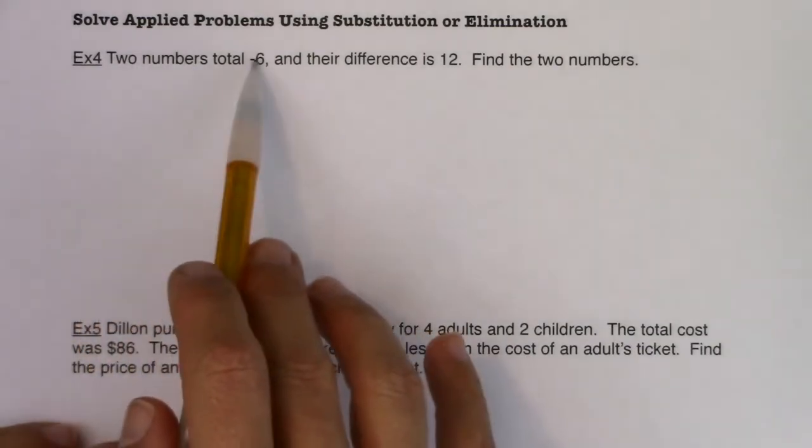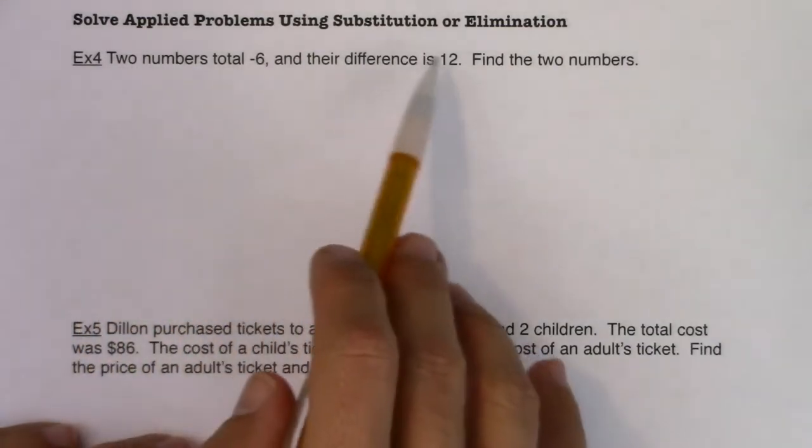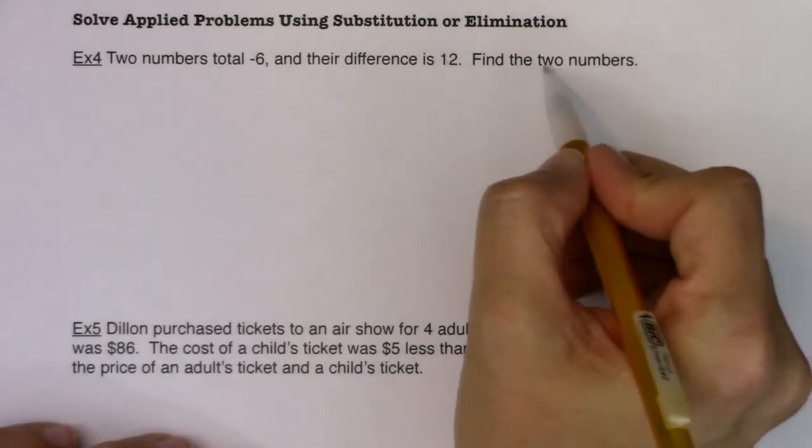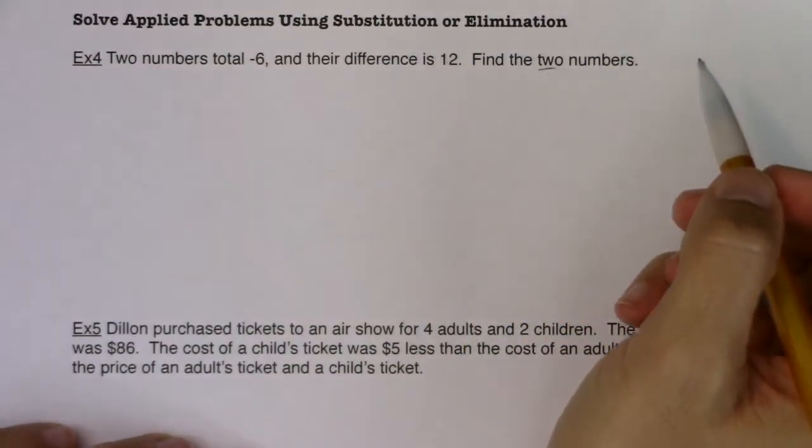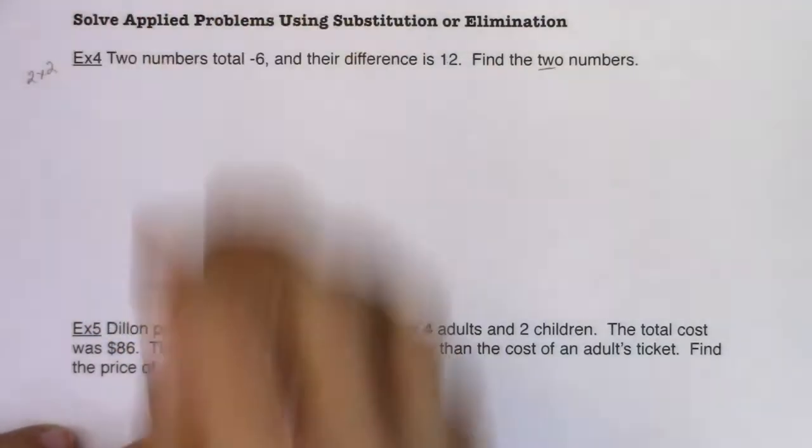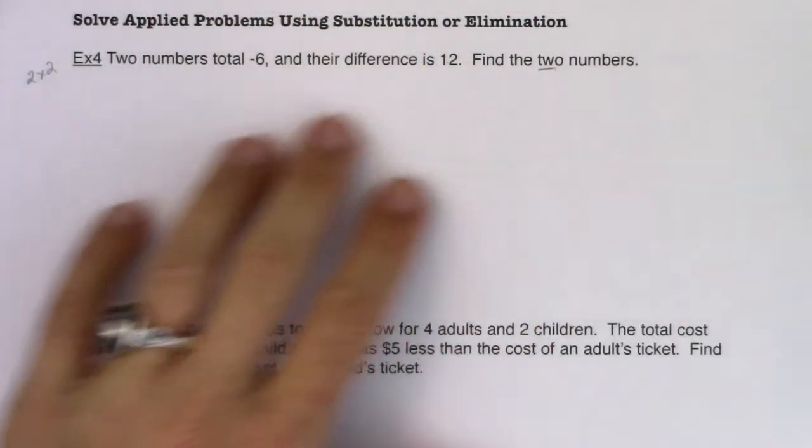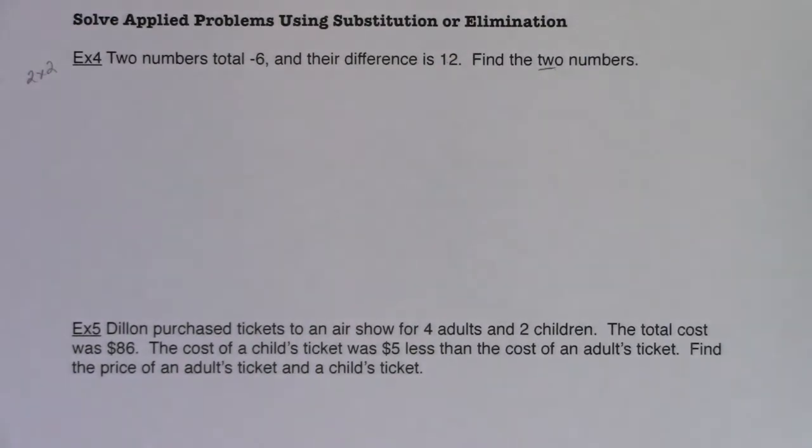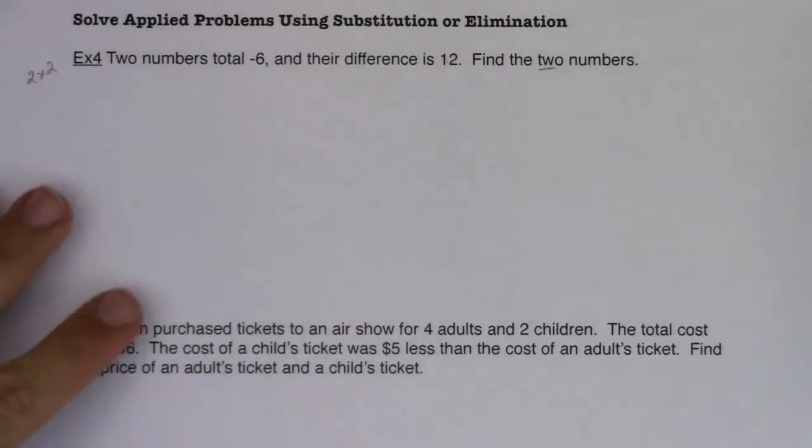Two numbers total negative six and their difference is 12. Find the two numbers. This one's nice in that I can see I have two numbers, so I'm solving a two-by-two system here. Somewhere in these two sentences are two equations.